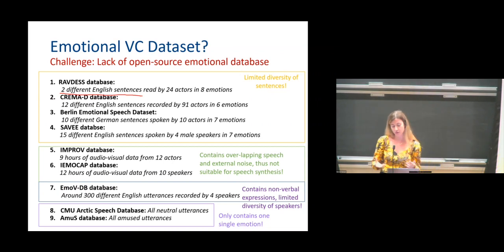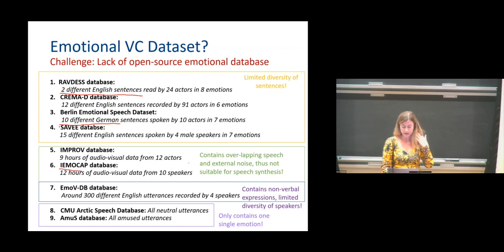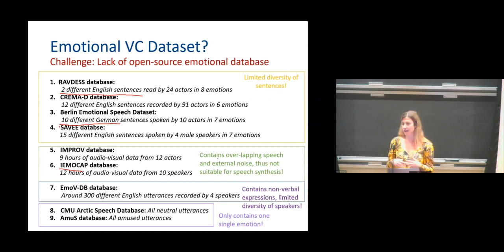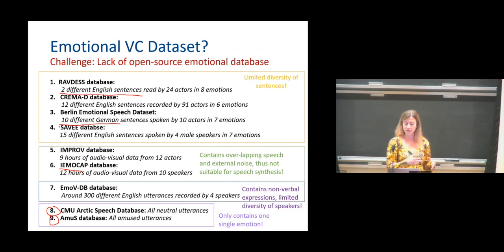For example, the Berlin Emotional Speech dataset has only 10 different German sentences, which is not enough to build models. There are also datasets like IEMOCAP or IMPROV databases, but these contain overlapping speech and external noise. In the TTS and voice conversion field, we don't use noisy datasets because the frameworks we have right now cannot handle noise that well. That is a future direction I will highlight. Other datasets like CMU Arctic, which is very famous, only contain a single emotion, and EMOS database only has EMOS utterances. All these databases are great for some applications, but when we want to build expressive TTS or expressive voice conversion, they are not enough.